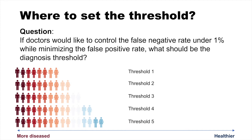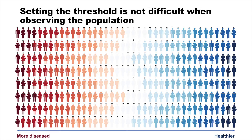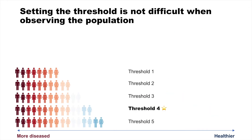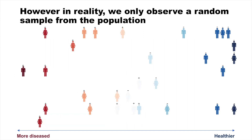Here are five example thresholds, where people selected by each threshold will be diagnosed as diseased and will receive treatments. If we can observe the human population and the disease status of every person, setting the optimal threshold is easy. In this cartoon example, threshold 4 is the optimal one, because it controls the false negative rate under 1% while minimizing the false positive rate.